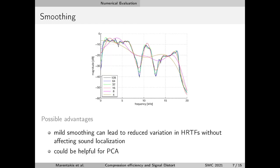Here you can see the smoothing options that we experimented with. Smoothing was implemented by taking the Fourier transform of the HRTF magnitude and then reducing the number of coefficients used upon reconstruction, which has a sort of low-pass effect, as you can see in the graph for different levels of smoothing — the HRTF becomes smoother and smoother.